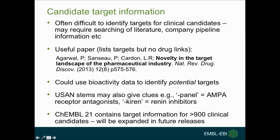We could also use bioactivity data from ChEMBL to identify potential targets for a compound — those the compound is most active against — though this is no guarantee of efficacy targets. USAN naming conventions also provide clues about mechanism of action: names ending in '-panel' indicate AMPA receptor antagonists, '-kirin' indicates renin inhibitors. Within the latest ChEMBL release, we have target information for around 900 clinical candidates, and this is being expanded in future releases.